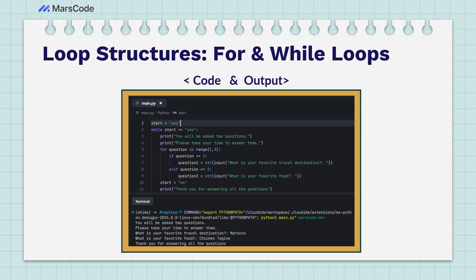When this program runs, you can see it says 'You will be asked two questions. Please take your time to answer them.' Then it asks 'What is your favorite travel destination?' — response: Morocco. 'What is your favorite food?' — response: chicken tagine. Then it says 'Thank you for answering all the questions.' Because start changes from yes to no, the while loop doesn't continue running, as the condition is no longer true. That's an example of implementing the for and while loops together in Python.